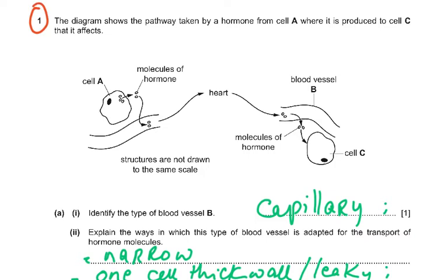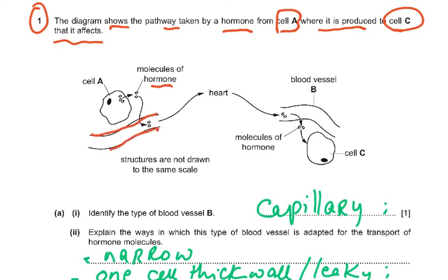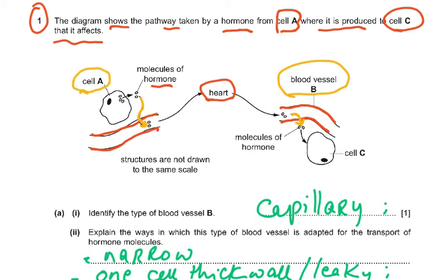Question 1: the diagram shows the pathway taken by a hormone from cell A where it is produced, to cell C that it affects. Cell A produces the hormone molecule, which enters a tube (blood vessel B) that goes to the heart and then to cell C, where hormone molecules move into the cell. Structures are not drawn to the same scale.